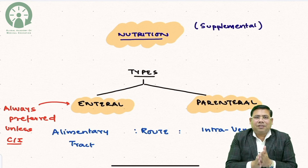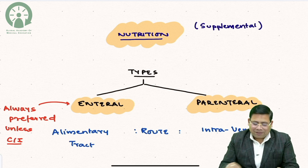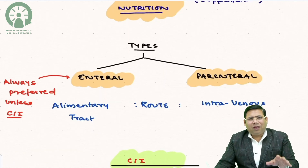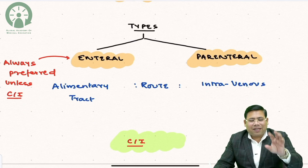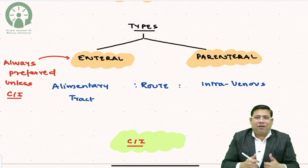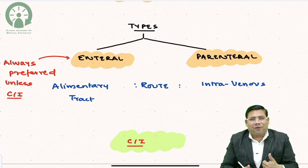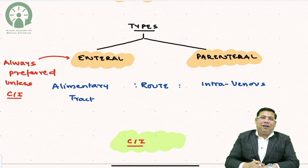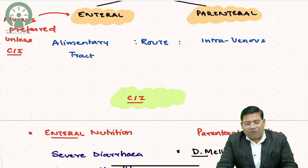We have two routes: enteral versus parenteral. The enteral route is via the alimentary tract — the natural way of giving nutrition — and that is why enteral nutrition is preferred unless it is contraindicated.